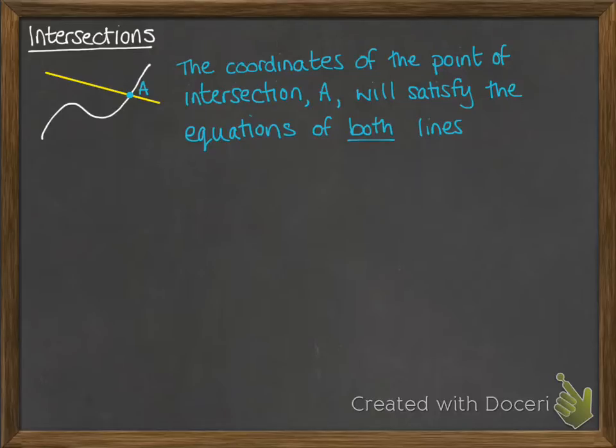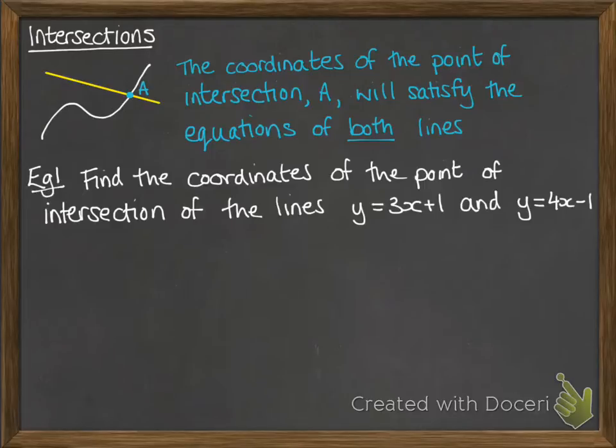Now, we use that to find those points of intersection. Here's our first example. Find the coordinates of the point of intersection of the lines y equals 3x plus 1 and y equals 4x minus 1.